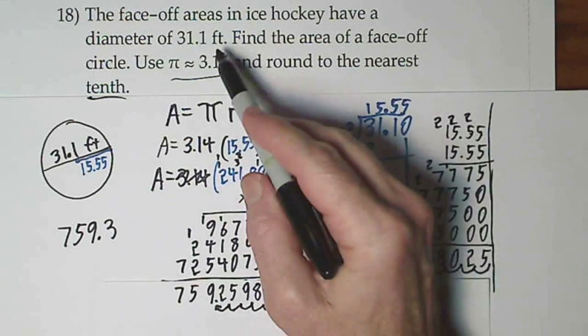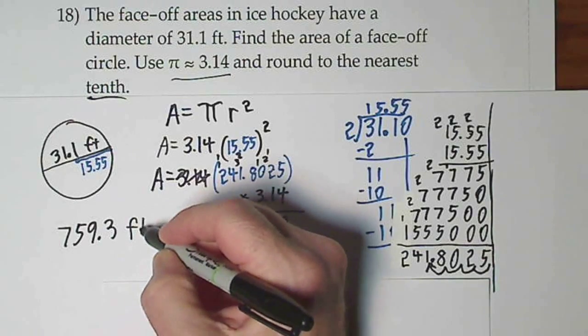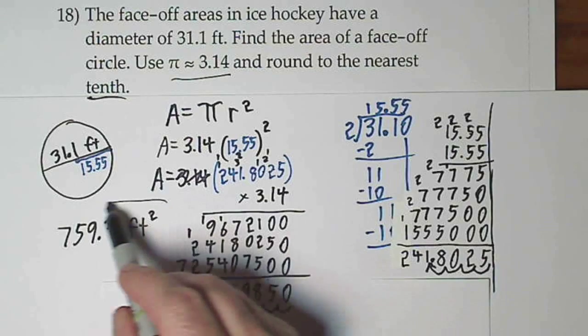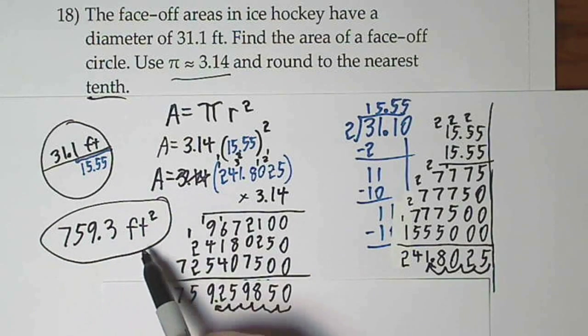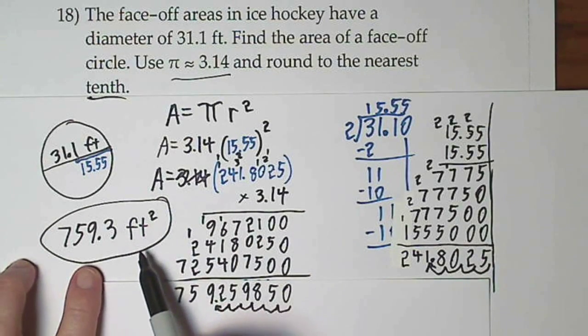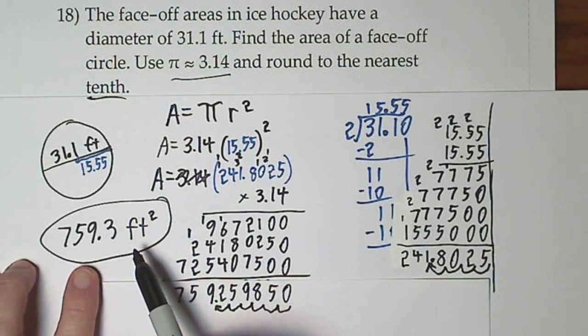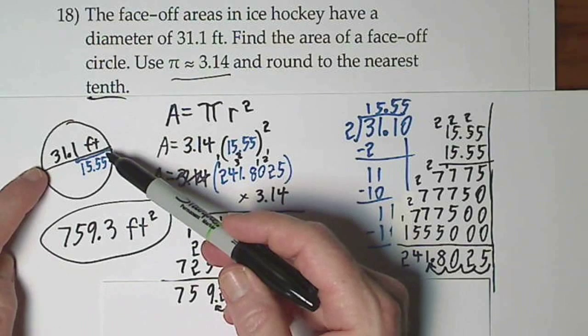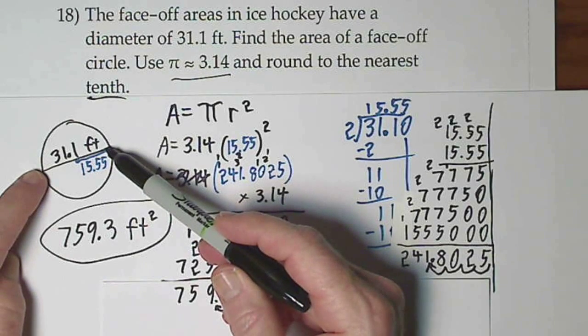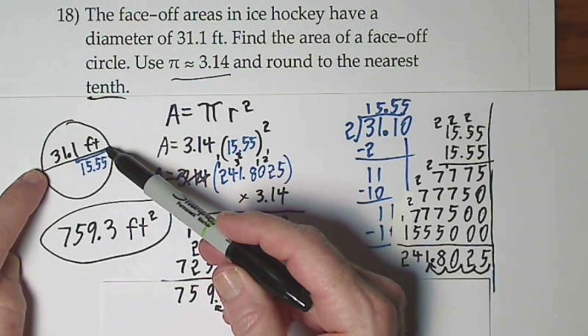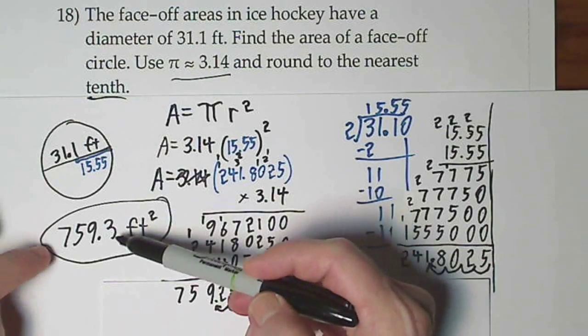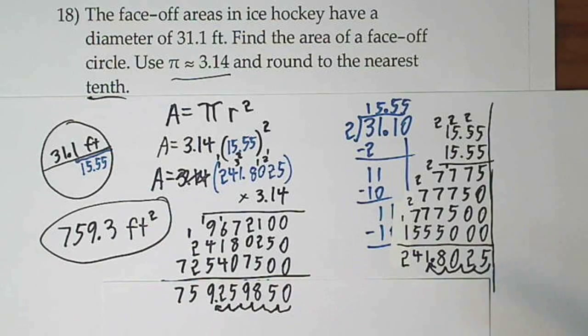The units are feet. And remember you have to put square because it's area. And again, that might seem hard to believe but it is correct. If you made this a square that was 30 by 30, that would be 900 square feet. So it makes sense that it's a little bit less than 900 square feet.